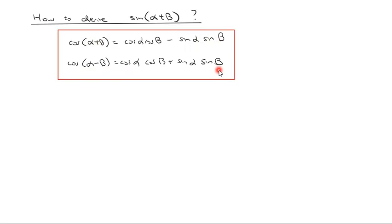Unfortunately neither of them are a sine, which means we can't do what we did last time and just change an alpha minus beta into an alpha plus beta. We need to change the cosine into a sine somehow to be able to use the rule.